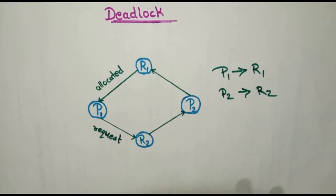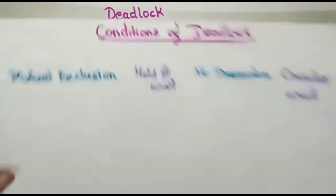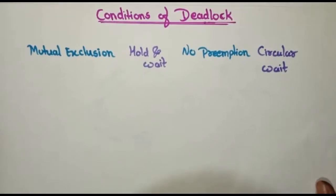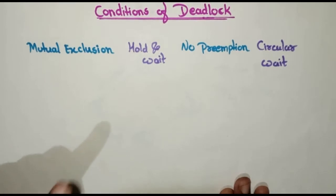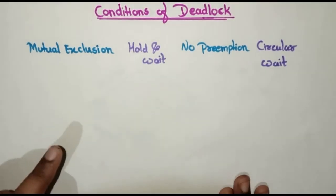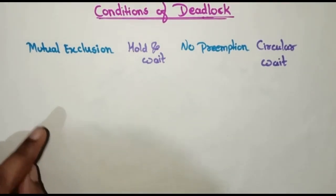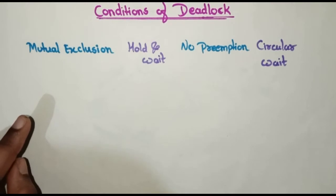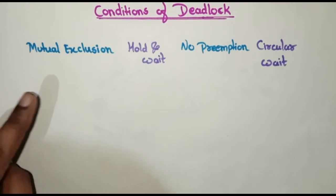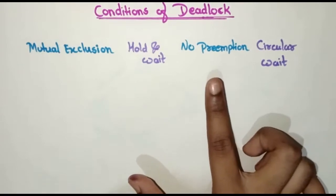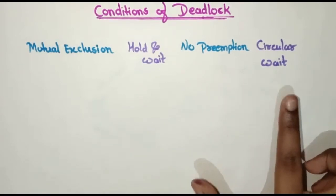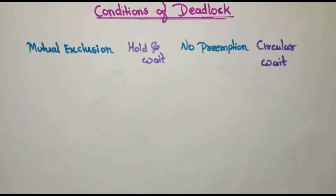There are four conditions of deadlock. When all four conditions happen simultaneously, a deadlock will occur. The first is mutual exclusion, the second is hold and wait, the third is no preemption, and the fourth is circular wait.